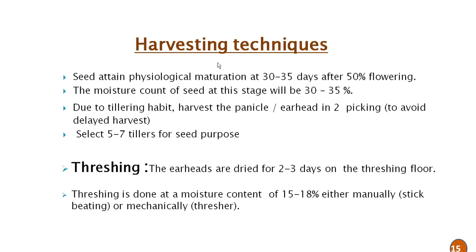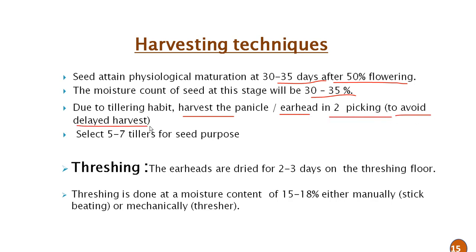Harvesting techniques: when seeds attain physiological maturity at 30 to 35 days after 50% flowering, the moisture content of the seed at this stage will be 30 to 35%. Due to the tillering habit, harvest the panicles or earheads by picking to avoid delayed harvest, and select 5 to 7 tillers for seed purpose.